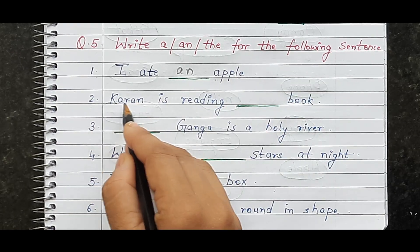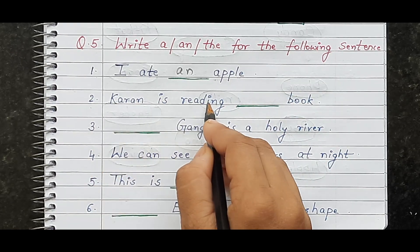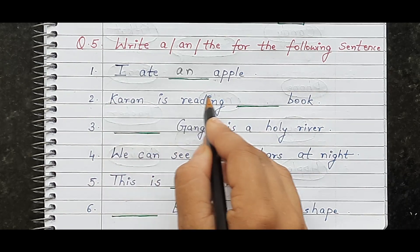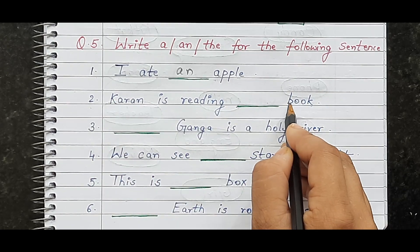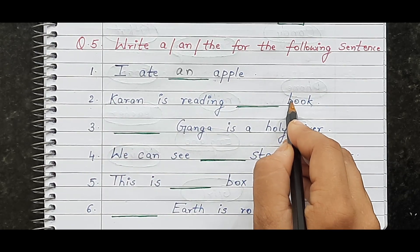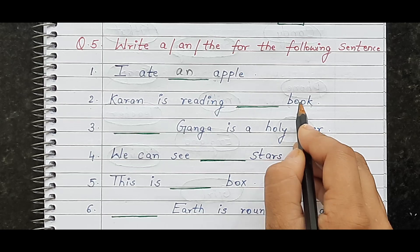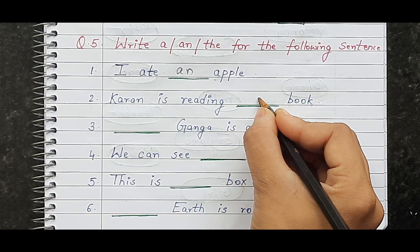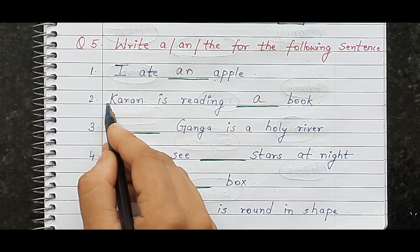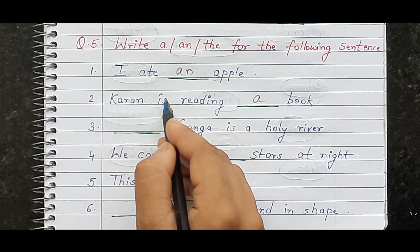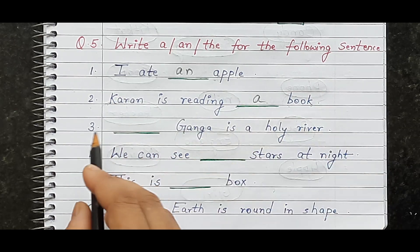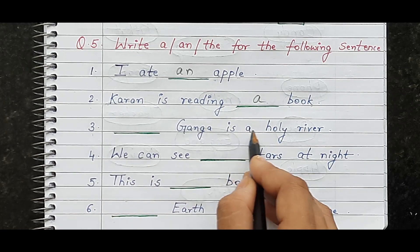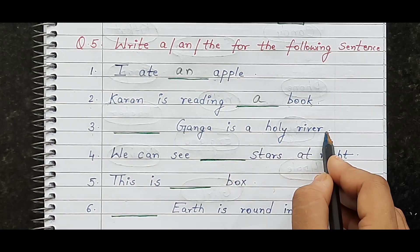Next question: 'Current is reading dash book.' The word 'book' starts with B, which is a consonant. Before a consonant, we use 'a.' So: 'Current is reading a book.' Next: 'Dash Ganga is a holy river.' Ganga is a specific, unique river, so we use 'the.' So: 'The Ganga is a holy river.'